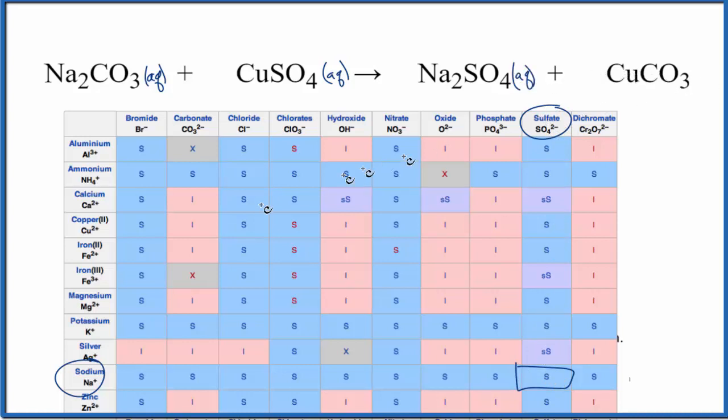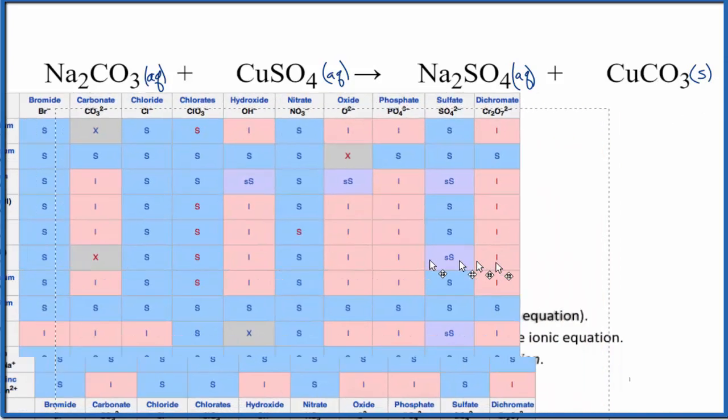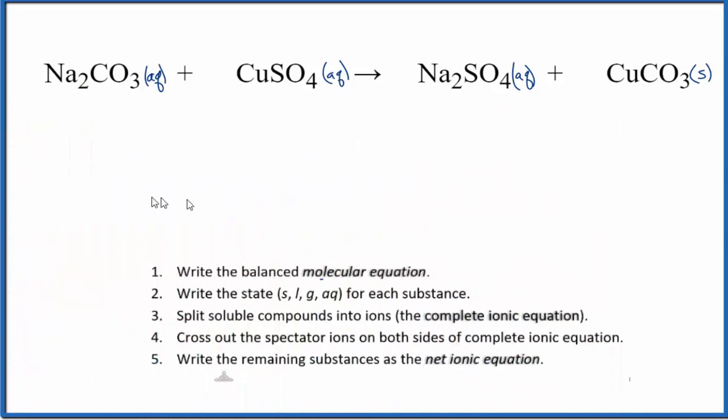The copper 2 carbonate, though, let's find copper right here and the carbonate, as we go down and over, that has an I. That means that that is insoluble. It's not going to be dissolved. It's going to be a solid at the bottom of the test tube or the beaker. So we're going to write S after our copper 2 carbonate. So this is a precipitate. Okay, we have the states for each one of the substances in our net ionic equation.